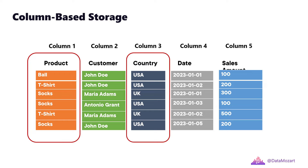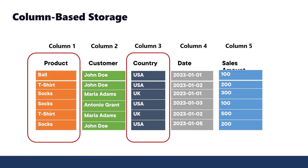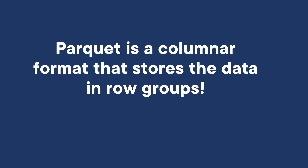Okay, that's nice, but the column store existed before Parquet, and it still exists outside of Parquet as well. So what is so special about the Parquet format? Parquet is a columnar format that stores the data in row groups. Wait, what? Wasn't it enough complicated even before this? Don't worry, it's much easier than it sounds.